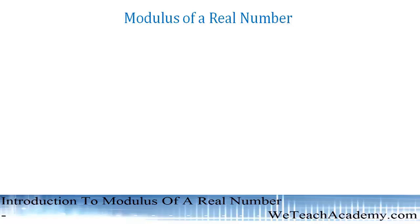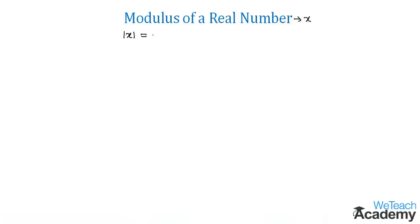The modulus or absolute value of a real number x is denoted by mod x. It is defined as: mod x equals x if x is greater than zero, negative x if x is less than zero, and zero if x is equal to zero.